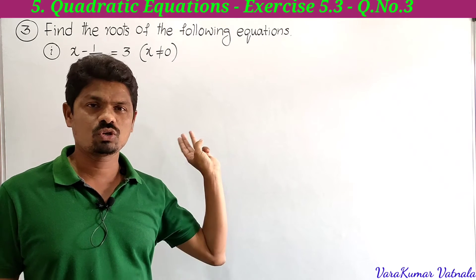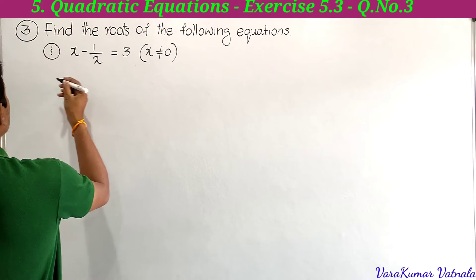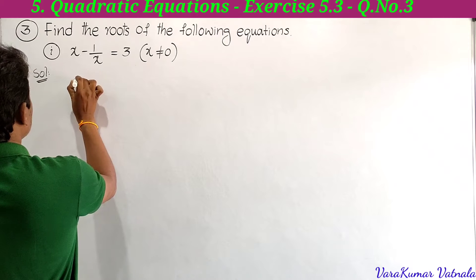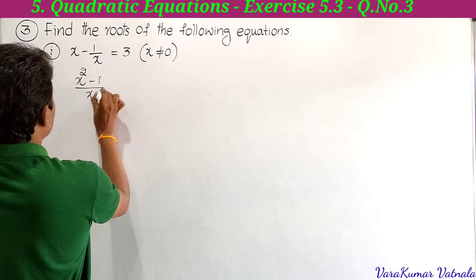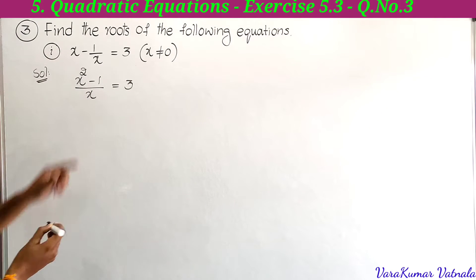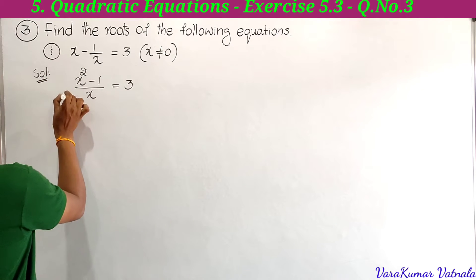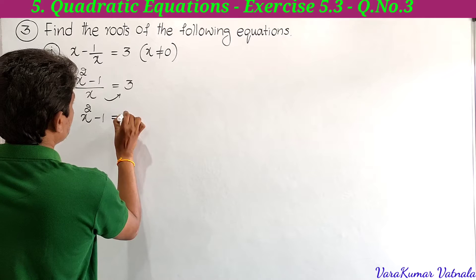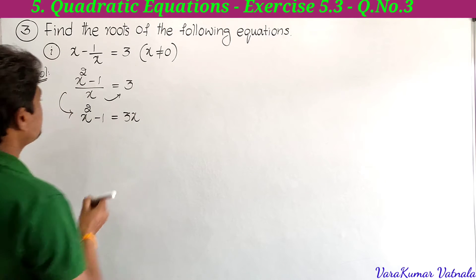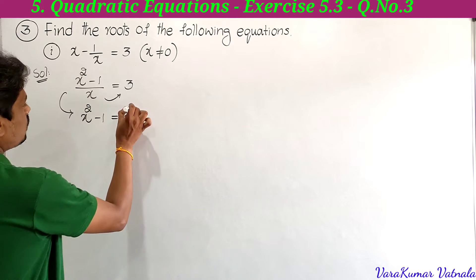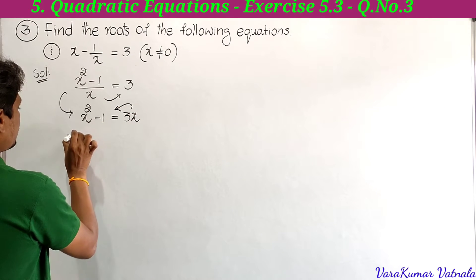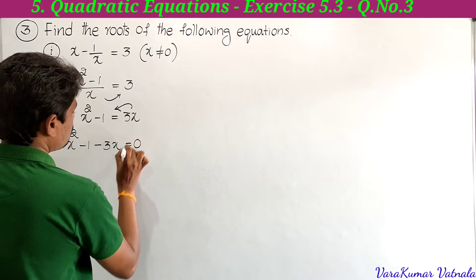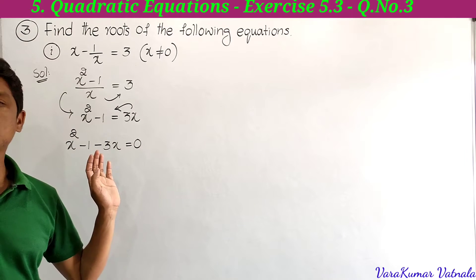To solve x minus 1 by x is equal to 3, we find the LCM and get x squared minus 1 divided by x is equal to 3. Taking x to the right side, it multiplies, giving x squared minus 1 is equal to 3x. Taking 3x to the left side gives x squared minus 3x minus 1 is equal to 0.